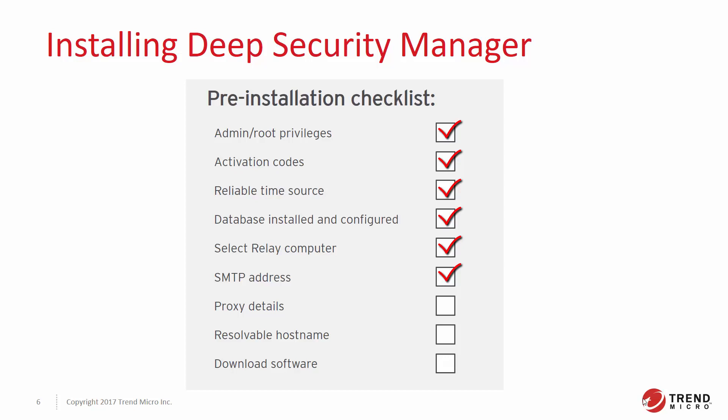Deep Security Manager uses port 25 by default for connections to the SMTP server. Deep Security Manager will need to connect to the Trend Micro update servers over the internet. If a proxy is needed for internet access in your environment, you will need to supply your proxy server address, port, and login credentials as part of the Deep Security installation process. Fully qualified domain names can be used for communication between Deep Security Manager and relay-enabled agents, agents and appliances, and hypervisors.